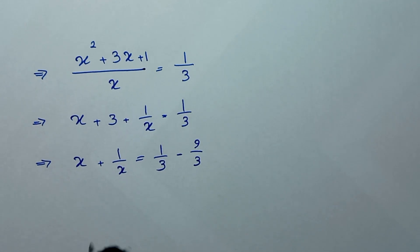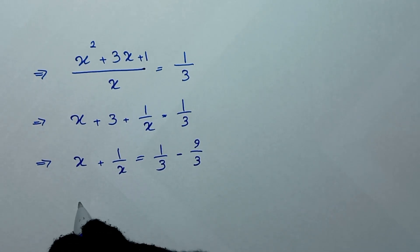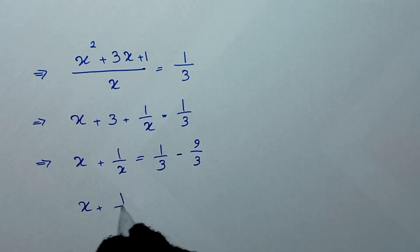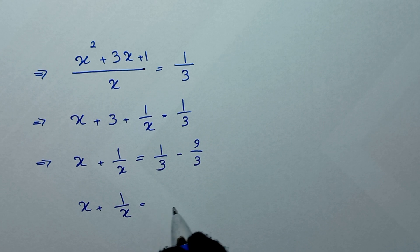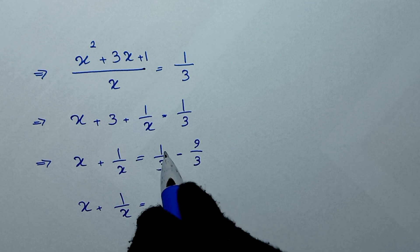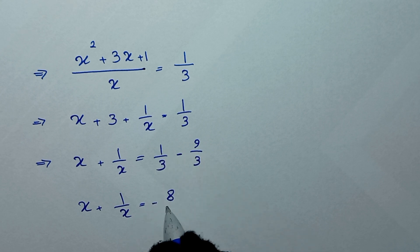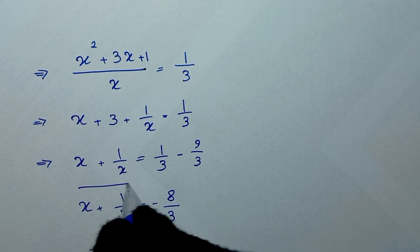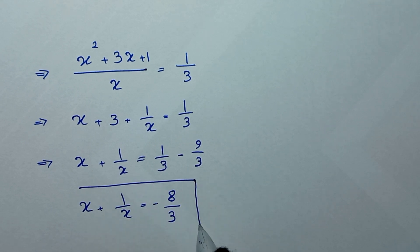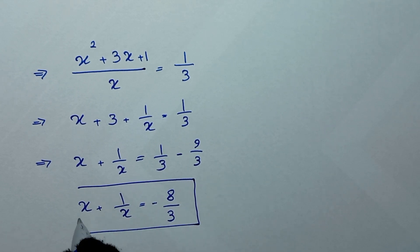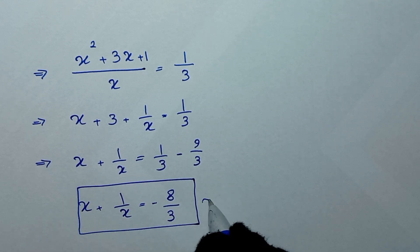From here, x plus 1 over x is equal to 1 minus 9 over 3, which is negative 8 over 3. We label this as Equation 1.